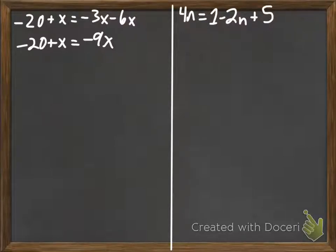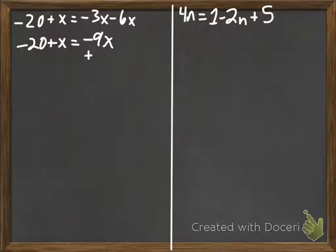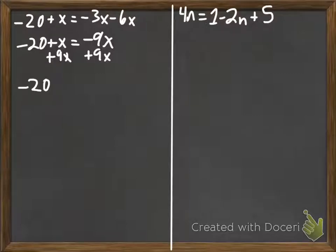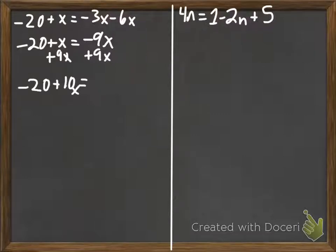Now we need to get our variable on one side. We're going to move the smaller to the larger, so we add 9x to both sides. We get negative 20 plus 1x plus 9x, which is 10x. A lot of people make the mistake of thinking there's nothing on the right side — but we just don't get rid of the equal sign. There is nothing over there, and the number that represents nothing is 0.